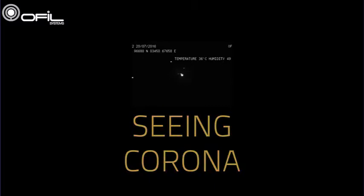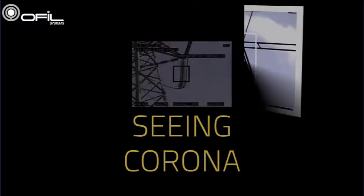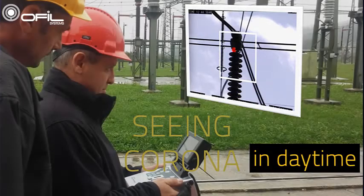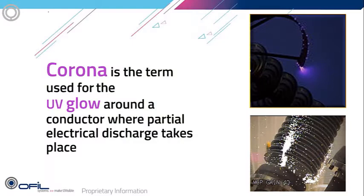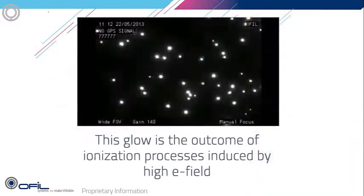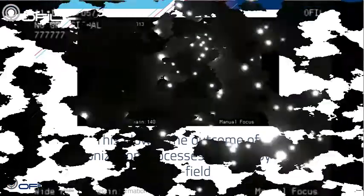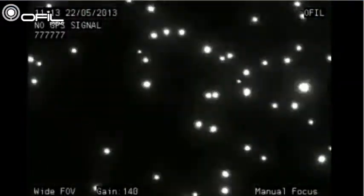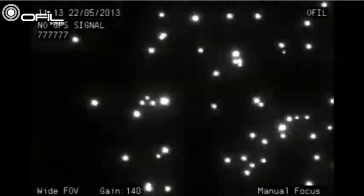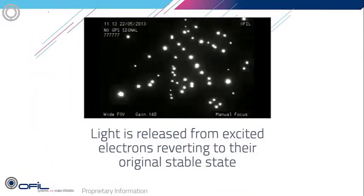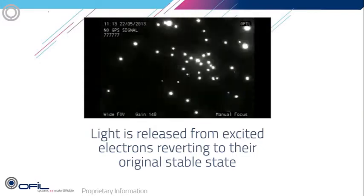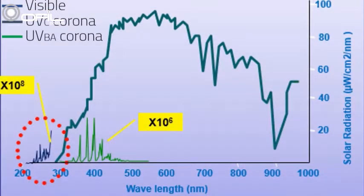The DayCor technology is the core of corona cameras and it stands for the ability to see ultraviolet radiation during daytime. Corona PD is the term used for the UV glow on a conductor where PD takes place. Under sufficiently high electrical field, electrons are accelerated in air towards the electrode, building up a space charge. This space charge disappears due to diffusion and recombination; during recombination, UV photons are released, some of which create new charged electrons and others glow as UV corona.